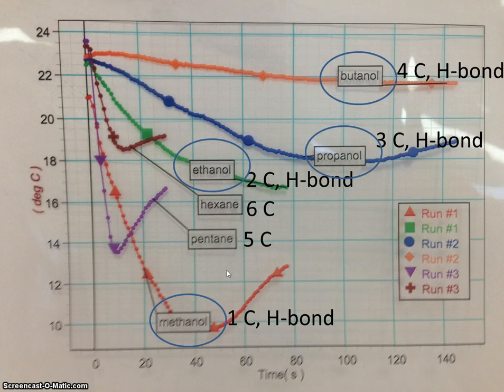Now we know that hydrogen bonding is a strong intermolecular force, and four of the six have hydrogen bonding. We also know that the more carbons a molecule has, the more London dispersion forces it will have. So hydrogen bonding and a high number of carbons means strong intermolecular force.